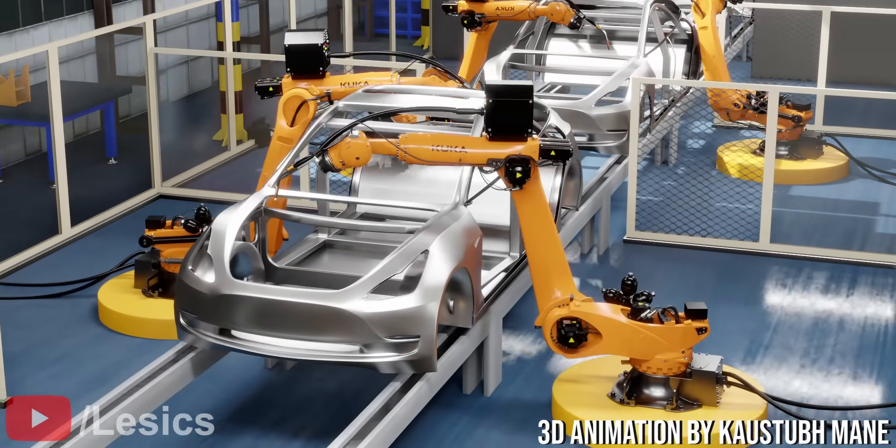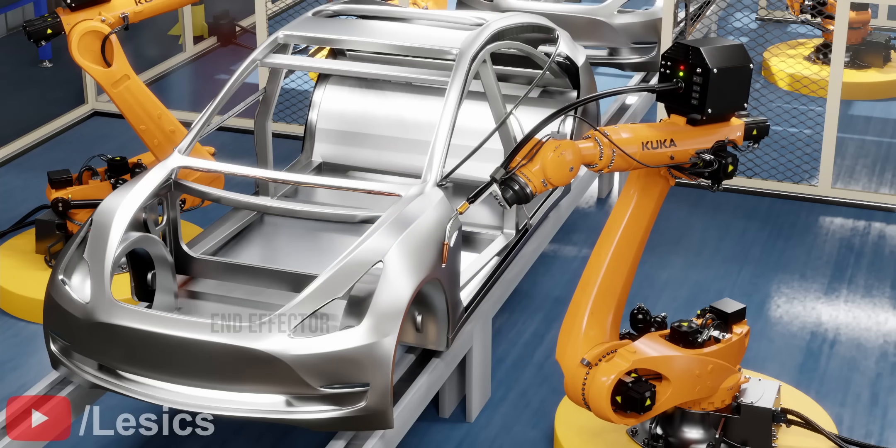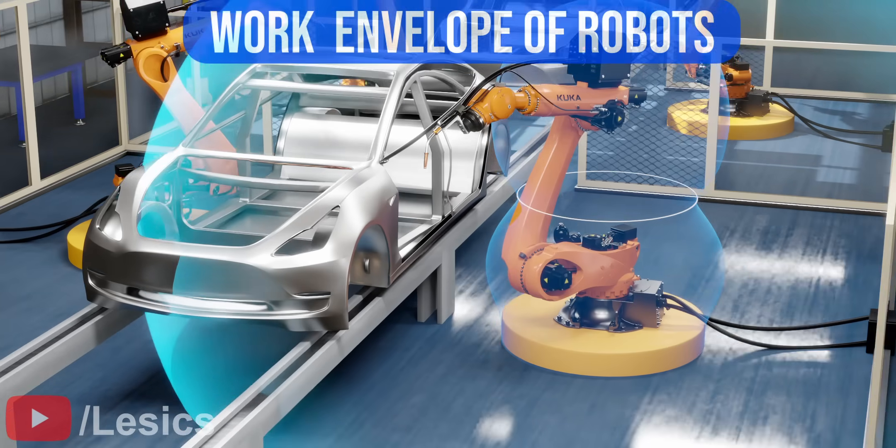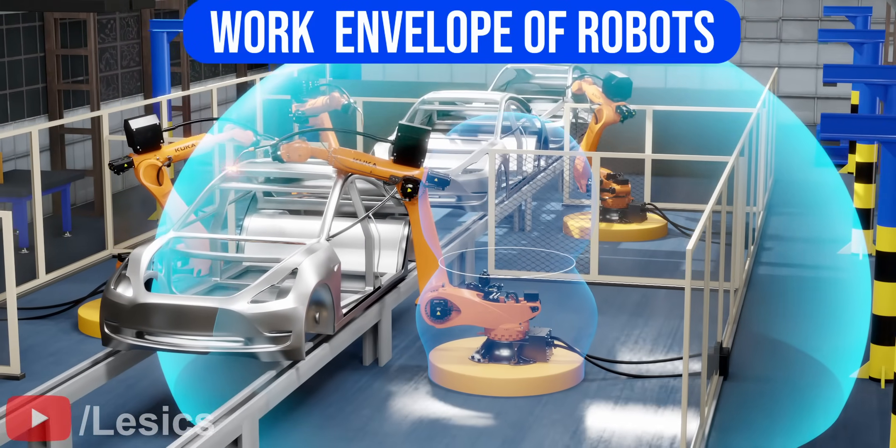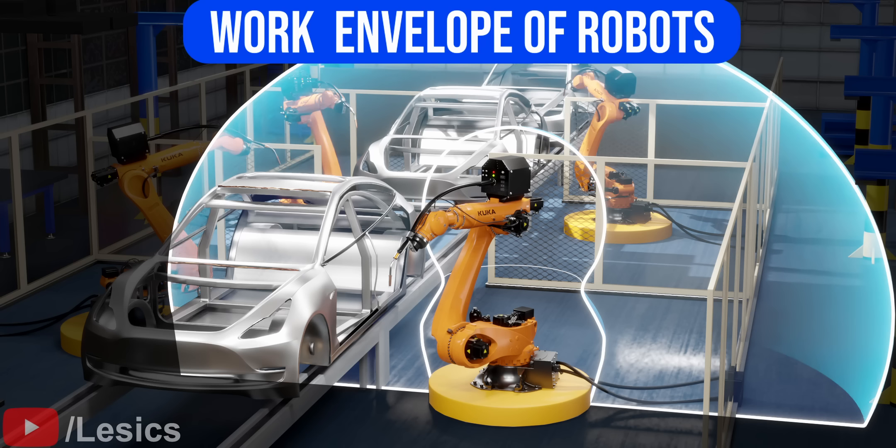Robots are designed based on the work envelope required. The volume the end effector of this robot is able to reach is known as the work envelope. For example, for this robot shown, the blue shaded volume is the work envelope. Let's learn more about this crucial concept of robotics.